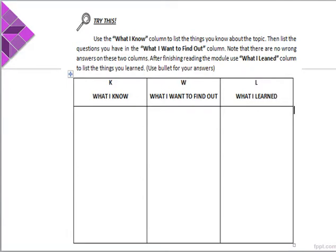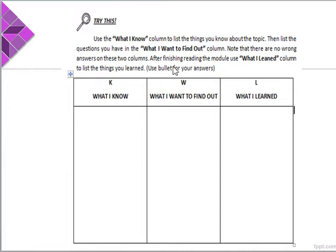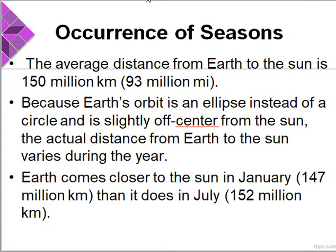As your motivation, use the 'What I Know' column to list the things you know about the topic. Then list the questions you have in the 'What I Want to Find Out' column. Note that there are no wrong answers on these two columns. After finishing reading the module and watching this video lecture, in the 'What I Learned' column, list the things you learned using bullet points. And now, let us commence on the lesson about seasons and temperature variation.